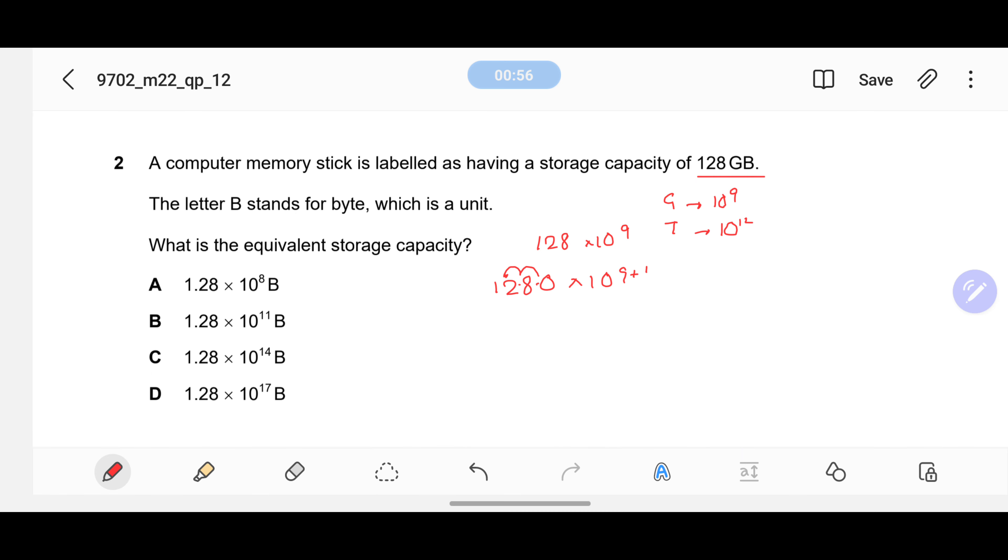If I bring the decimal here, this value becomes plus 1, meaning it becomes 10. Now if I take this decimal point here, the value increases by one more, meaning it becomes 11. So this means 1.28 × 10^11.